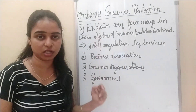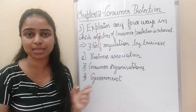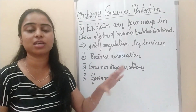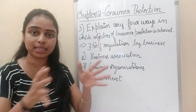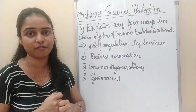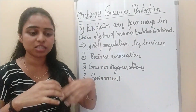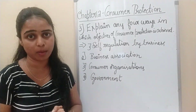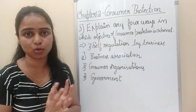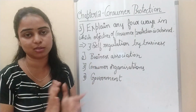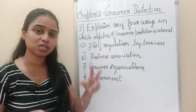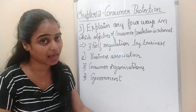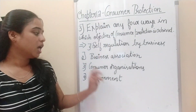The second method is business associations. There are a lot of business and trade associations, and through these associations the objective of consumer protection can be achieved.